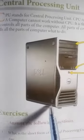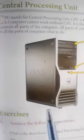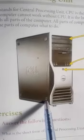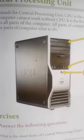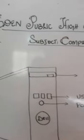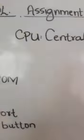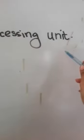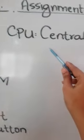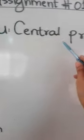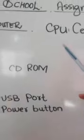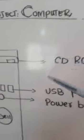यानि कि जो computer है, उसको सारी information देता है — कौन देता है? CPU देता है — कि उन parts को क्या करना है। Now come to the board. जैसे कि मैंने आपको बताया है कि जो CPU है, उसका full form क्या है? Central Processing Unit। CPU stands for Central Processing Unit. Central Processing Unit यानि CPU जो है, वो एक processing device है।